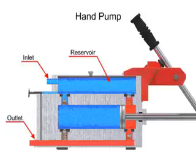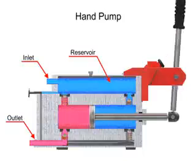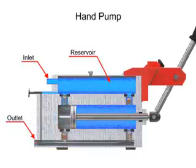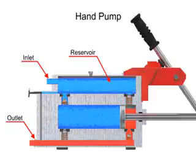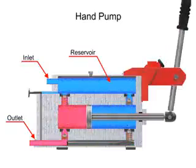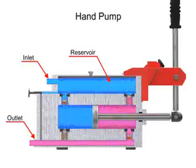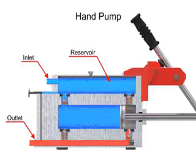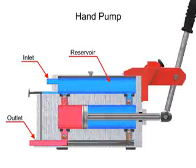Double acting hand pumps are more efficient, allowing fluid to both enter and discharge on both strokes of the piston. Moving the pump handle in either direction allows fluid to be drawn in from the reservoir and discharged via the outlet ports. Check valves in all locations prevent fluid backflow.